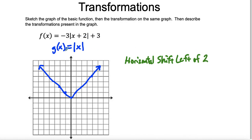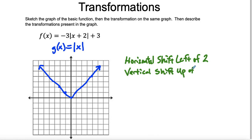So I know that I'm going to go to the left two. I also notice that there's a three outside. Let's put the plus three here — that's the other shift. That is a vertical shift up of three. The plus three means that it goes up three.